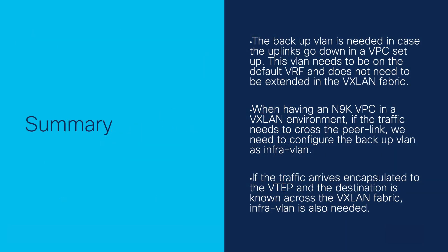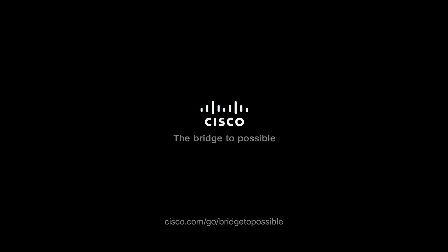In summary, the backup VLAN is needed to avoid traffic black holes in case a VPC VTEP loses its uplinks to the spine. This VLAN is used by the VTEP that loses its uplinks to have reachability to the spine over the peer link, using the VPC peer where the adjacency to the spine is still up. But to be able to correctly forward traffic in VXLAN, the addition of InfraVLAN to this backup VLAN is also needed. This concludes the video. Thank you for watching.